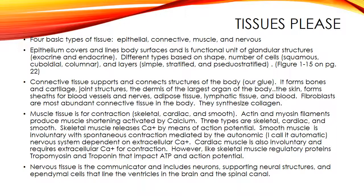Intercellular junctions can be tight, adhering, or gap junctions. Connective tissue supports and connects body structures — it forms the bones of the skeletal system, joint structures, blood cells, and intercellular substances. Connective tissue can be divided into loose or areolar, which fills body spaces; adipose, which is fatty; and reticular, which makes the framework of many body structures. Dense connective tissue can be regular or irregular, forming things like tendons and ligaments and the dermis of the skin.